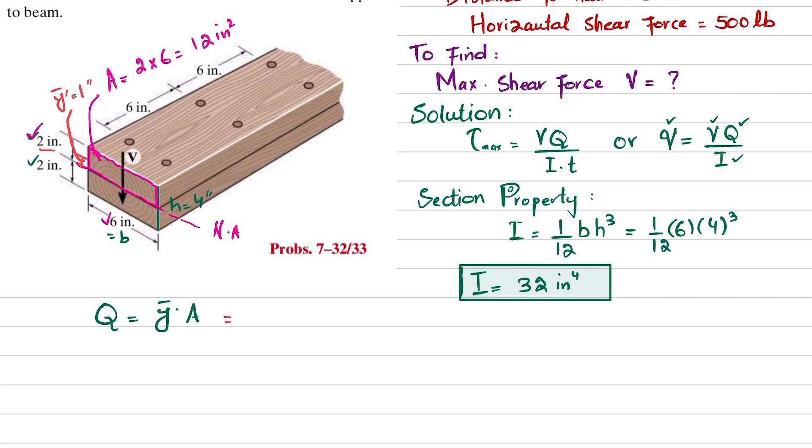You can just put the value. Y-dash is 1 and area is 6 multiplied by 2, so Q will be equal to 12 inch cubed.